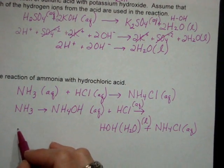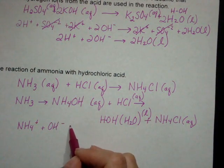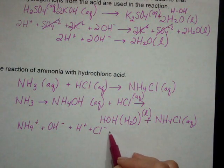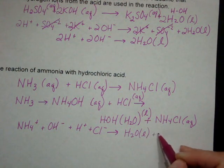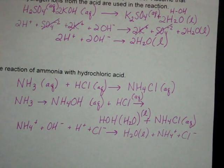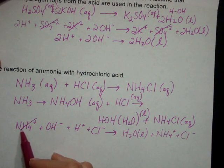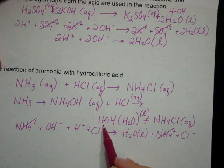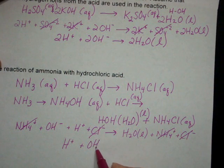So if we break it up, we have NH4 plus plus OH minus plus H plus plus Cl minus yields H2O liquid plus NH4 plus plus Cl minus. Again, we can cancel out our spectators. So that gets rid of ammonium. OH and H have to stay because they're making water and chloride. So we have H plus plus OH minus yields H2O liquid.